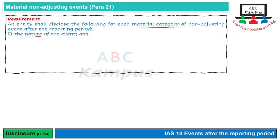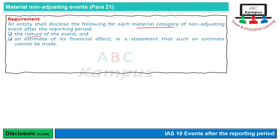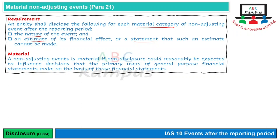اس کے بعد estimate of financial effect دینا ہوتا ہے۔ اگر estimate نہیں بنا سکتے تو statement دیں کہ 'such estimate cannot be made۔' Material کا مطلب ہے وہ information جو اپنی nature یا size کی وجہ سے important ہو اور users کی decision making کو effect کر سکے۔ IAS-10 میں materiality کی definition ہے: a non-adjusting event is material if non-disclosure could reasonably be expected to influence decisions that the primary users of general purpose financial statements make on the basis of those financial statements۔ Primary users میں investors یعنی shareholders شامل ہیں۔